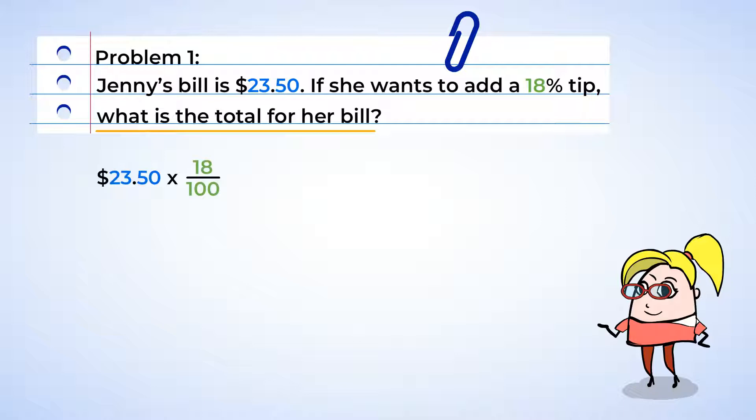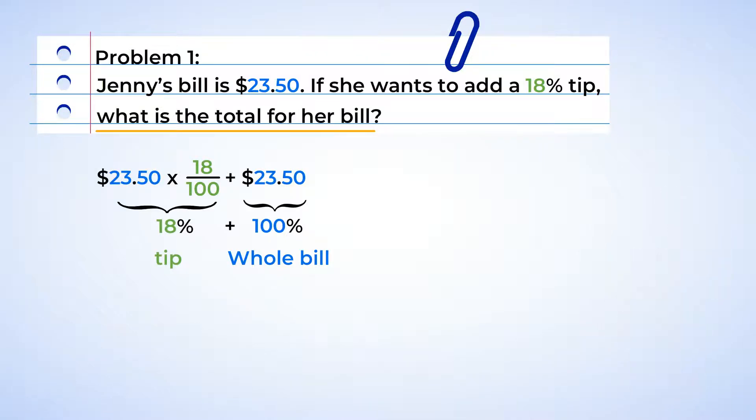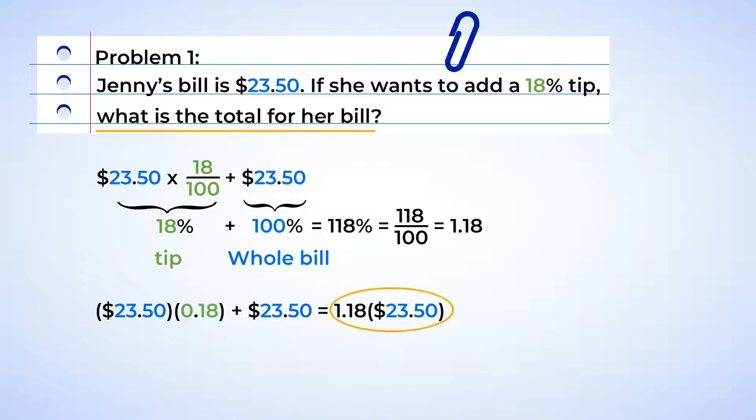And once we find that amount, we'll need to add it to the $23.50 that we started with. This is like adding 18% to 100%. Why? Well, because if you think about it, the whole bill represents 100% of what Jenny has to pay. And the tip is 18% of that 100%. So the total plus the tip is 118%, or one hundred and eighteen hundredths as a fraction. Now when we finally turn it into a decimal, that's 1.18. So to find the final sum, we can combine these two terms and just multiply the bill by 1.18. By rewriting the expression, we have made a two-step problem into a one-step problem. Fantastic!